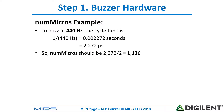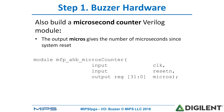Here's an example of what the buzzer hardware should do. To buzz at 440 hertz, the cycle time is 2,272 microseconds. So num_micros should be set to half of that cycle time, or 1,136. As supporting hardware for the buzzer, we're also going to build a microsecond counter that counts the number of microseconds since system reset.